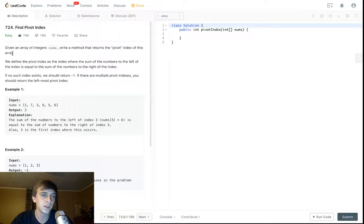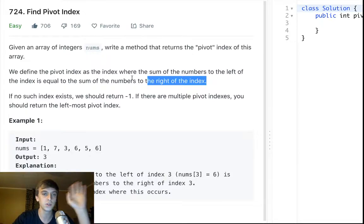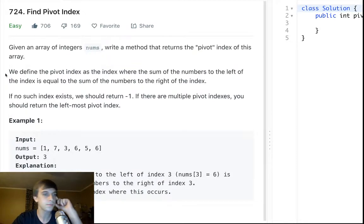This is Find Pivot Index. This is an easy problem, very easy, one of the easiest on LeetCode. Given an array of integers nums, write a method that returns the pivot index of this array. We define the pivot index as the index where the sum of the numbers to the left of the index is equal to the sum of the numbers to the right.